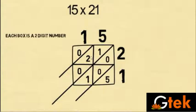So 1 into 2 is 2. 0, 2. 2 into 5. That is 5 into 2 is 10. And 1 into 1 is 1. 5 into 1 is 1.